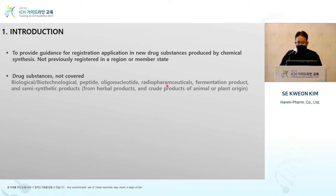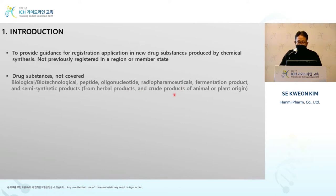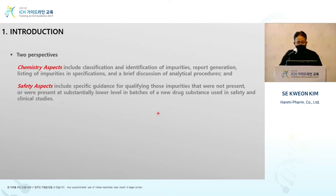This guideline covers the new drug substance utilizing chemical synthesis. So when I say DS, it is produced by chemical synthesis — that's the scope. Biological, biotechnological products, peptides, oligonucleotides, radiopharmaceuticals, fermentation products, herbal products, and others are not in scope. However, the basic concept of the guideline is applicable to these types of drug substances, and you can refer to this guideline for further information even for those product types.